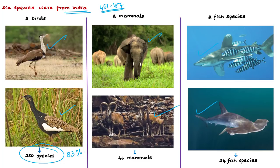Out of the 457 species from India, around 380 species — about 83% — are birds, making birds the bulk of migratory species. Before COP 13 it was 378, but after the addition of Great Indian bustard and Bengal florican, it became 380. Among birds, the family Muscicapidae has the highest number of migratory species, followed by Accipitridae — raptors such as eagles, owls, vultures, and kites.